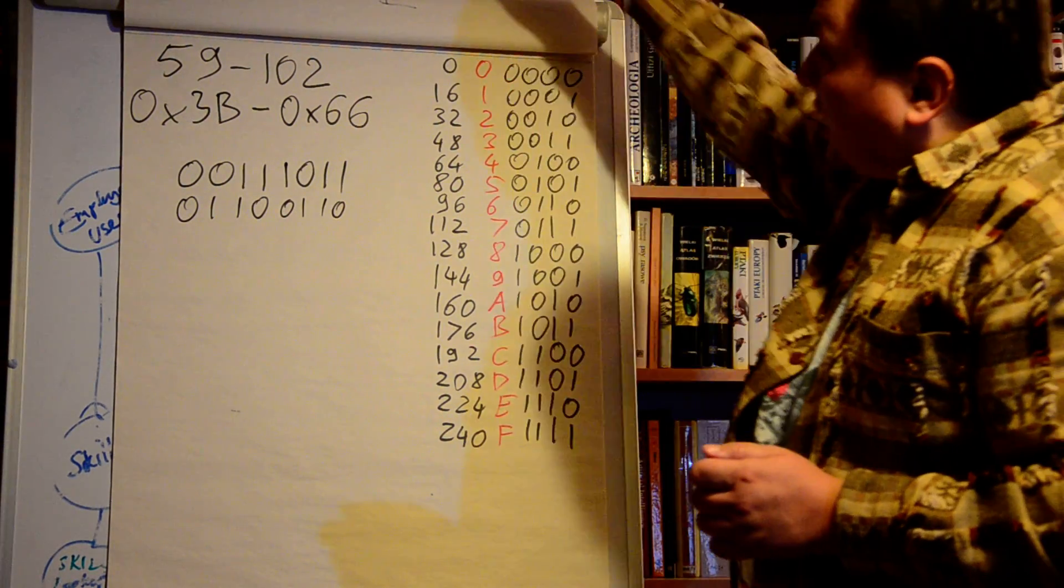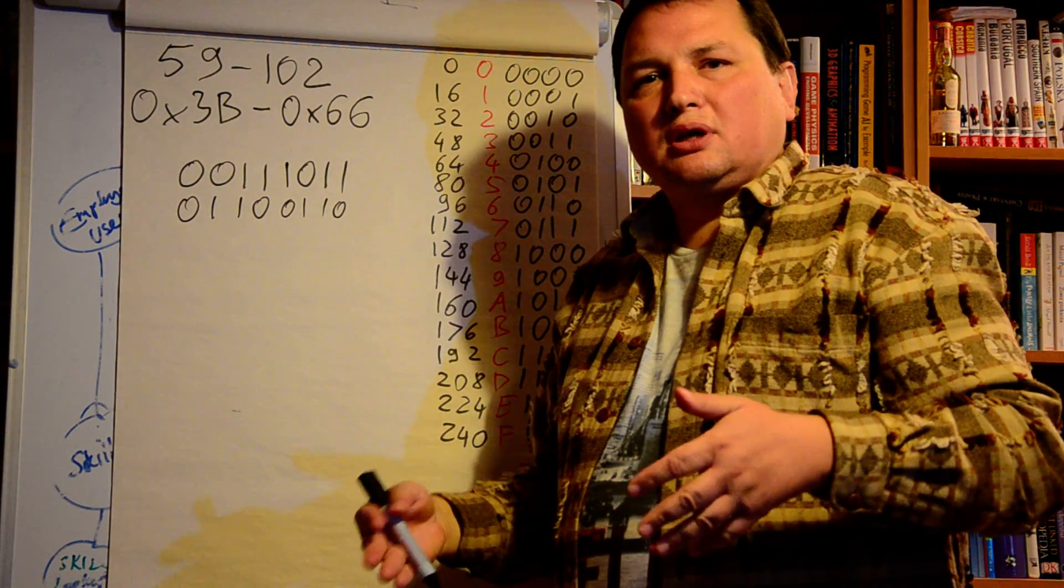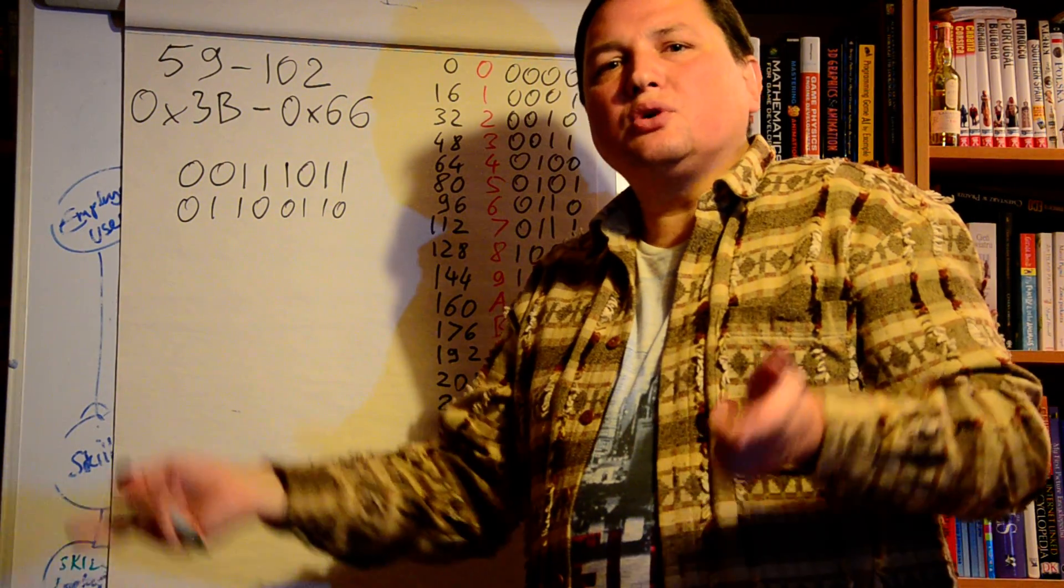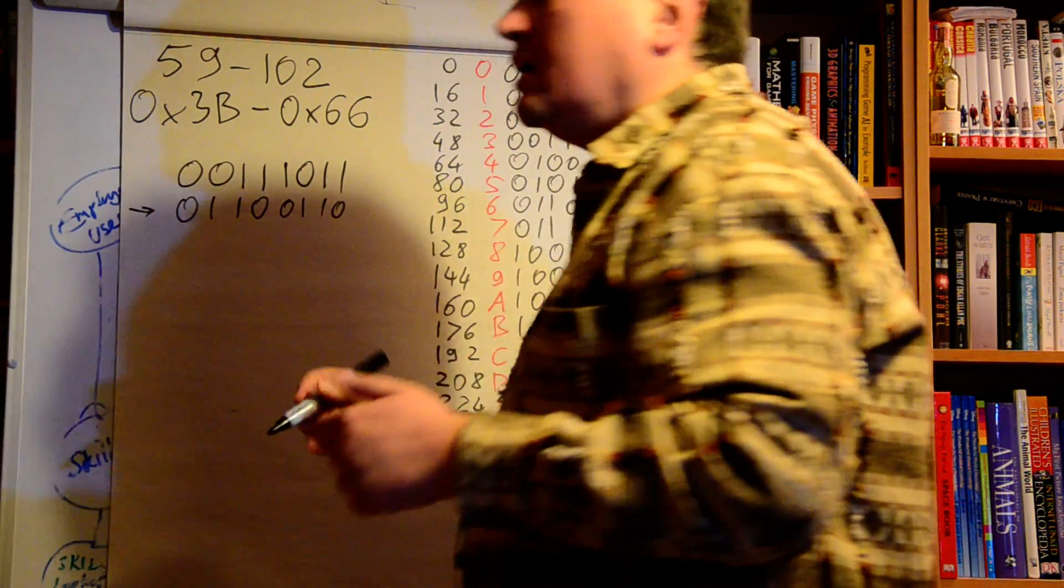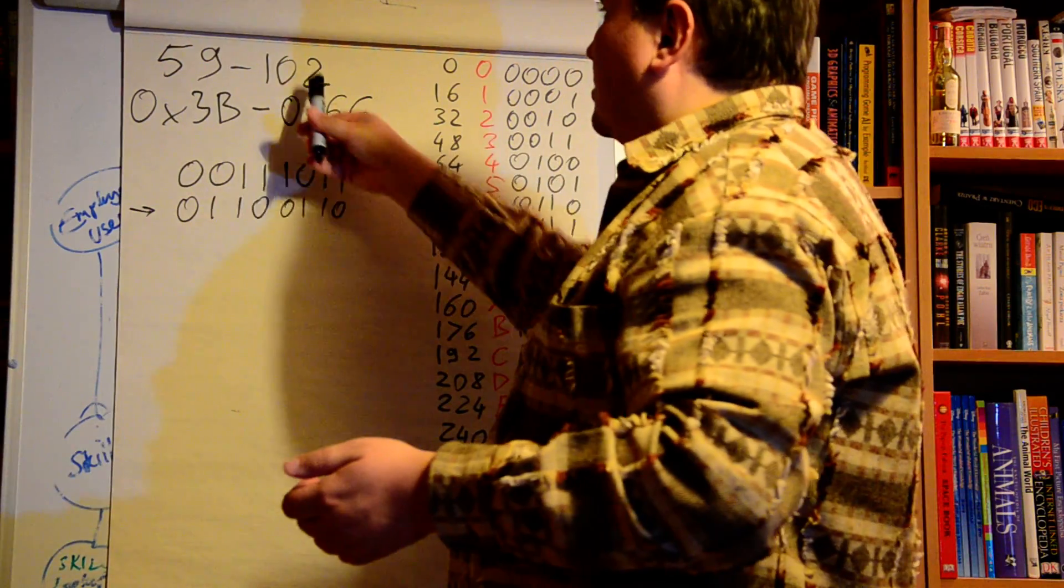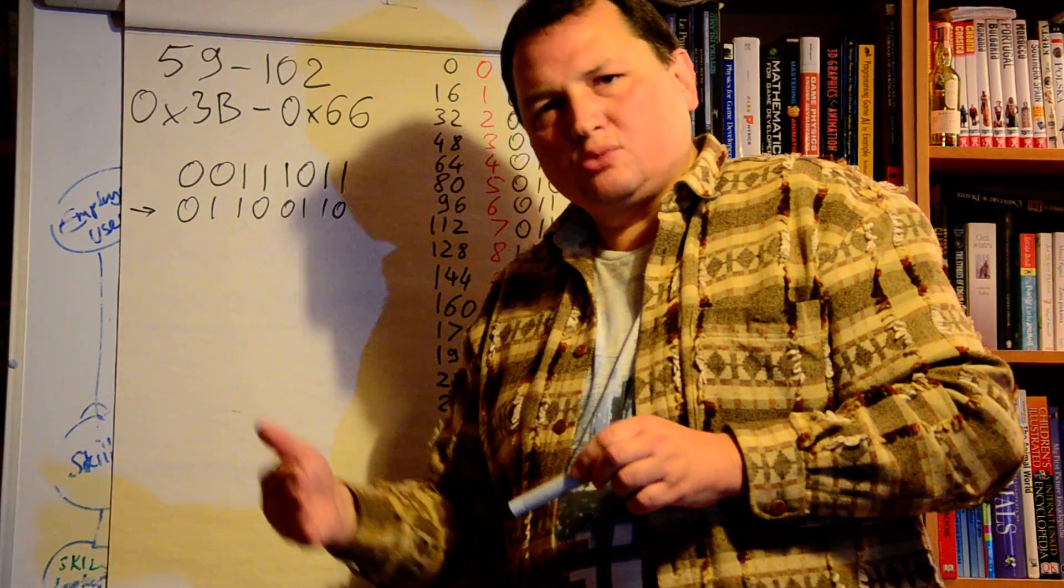But what we have here is subtraction. Subtraction in two's complement code can be represented as addition of a negative number. So the next step is to take this number here and convert it into negative number. So we have 102 and we want to have minus 102.